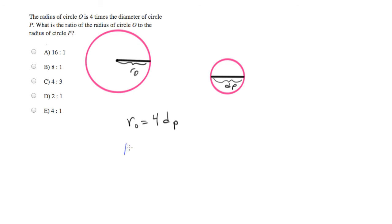Let's say that we pick 16 as the radius of O. What will that mean the diameter is of circle P? That'll mean the diameter of circle P is 4.